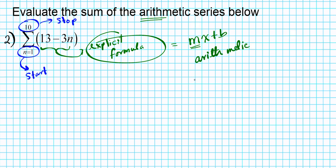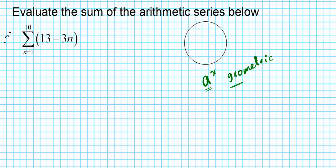If you have a summation problem of the form a to the x — an exponential expression — then it's going to be geometric. So remember: linear is arithmetic, and exponential is geometric because a to the x indicates repeated multiplication by a. That's just a side note; now let's go ahead and solve the problem.